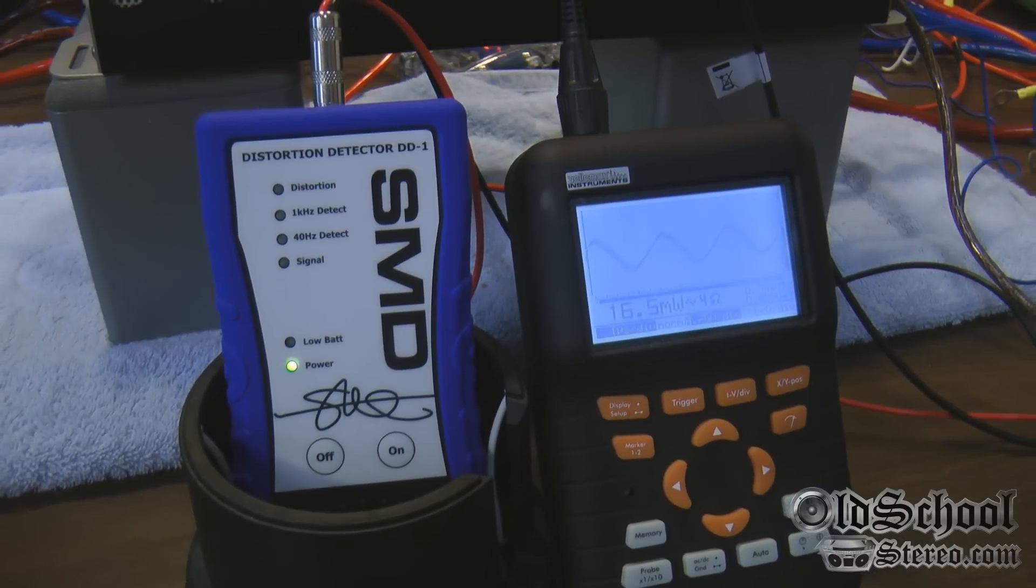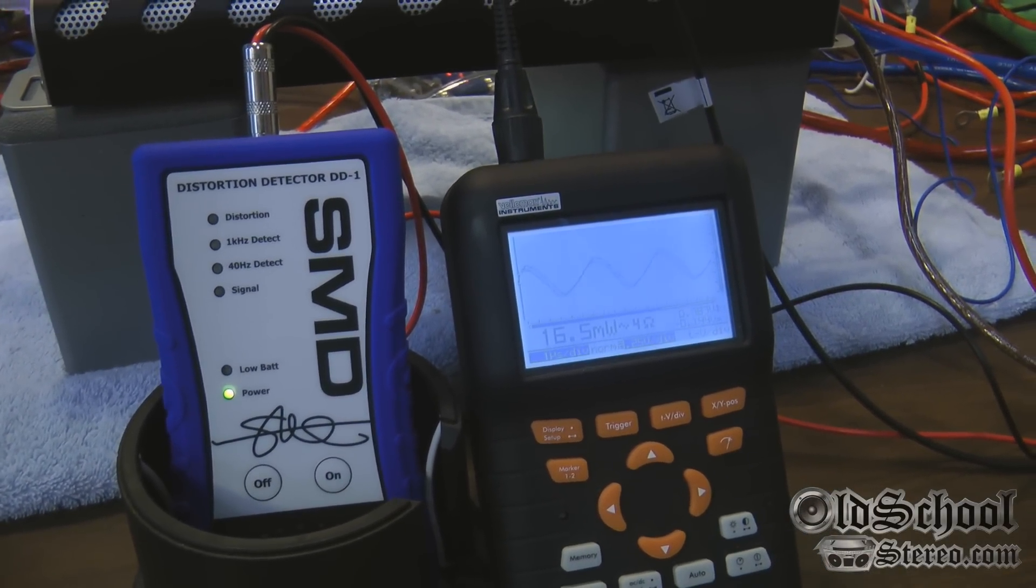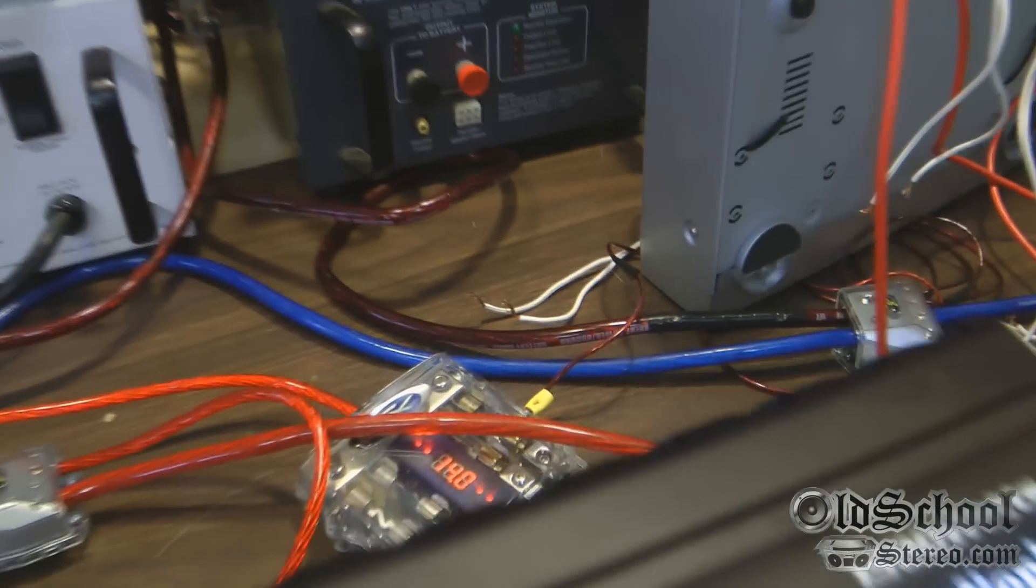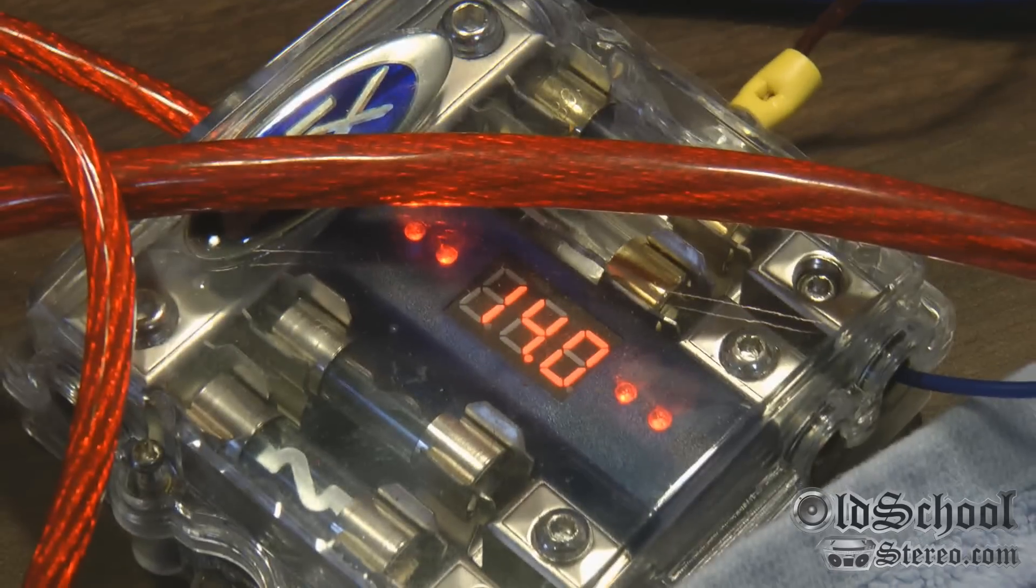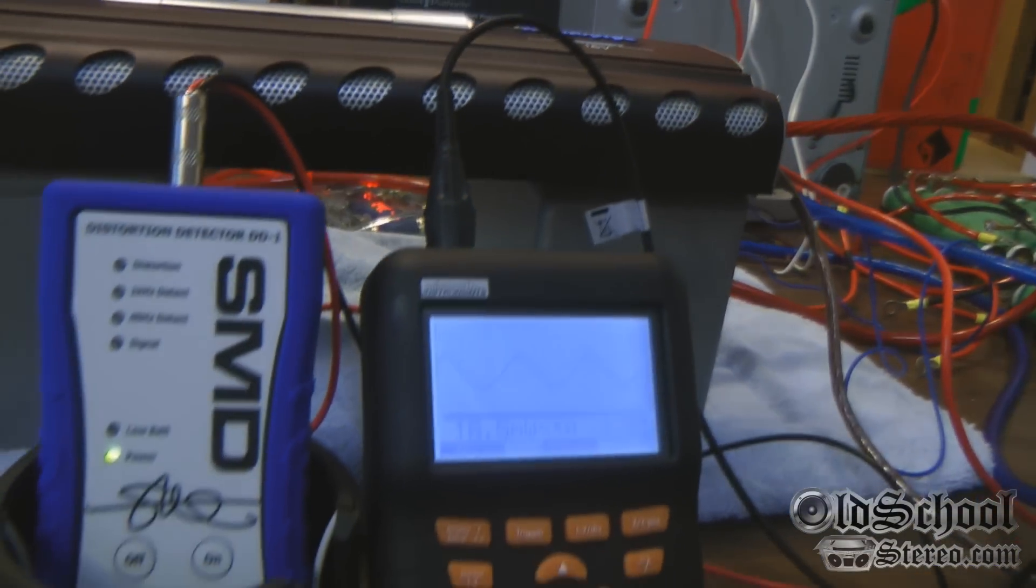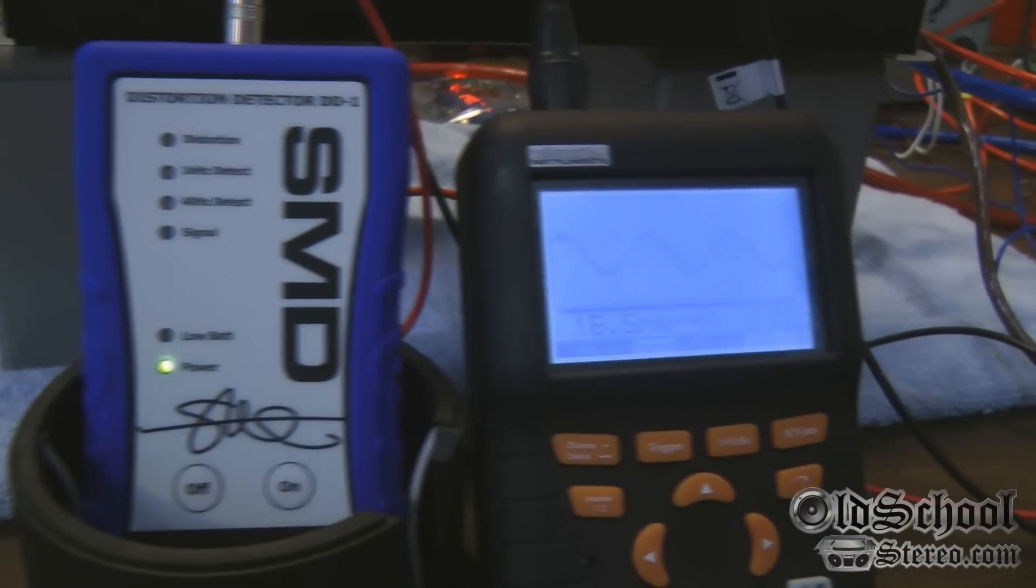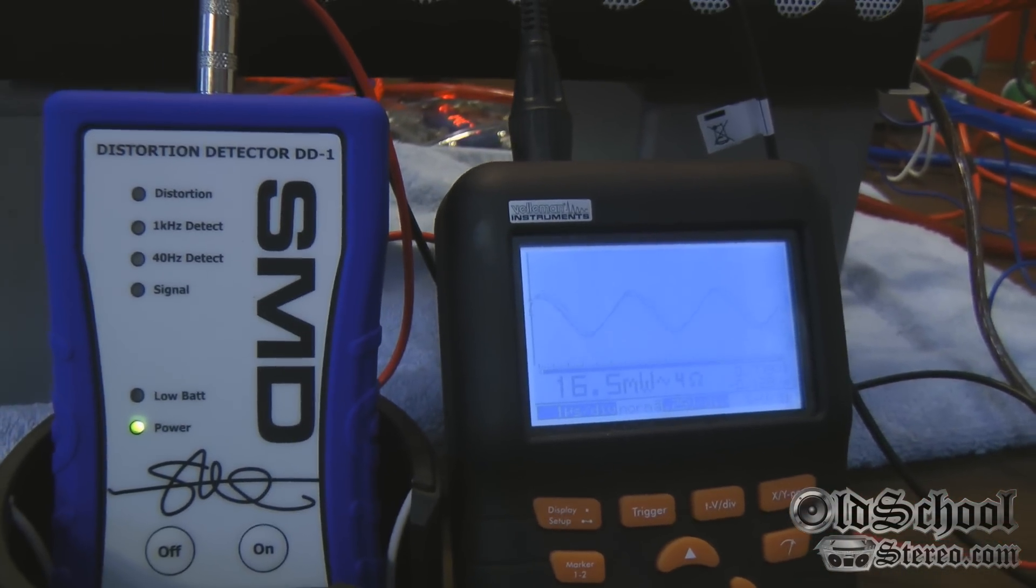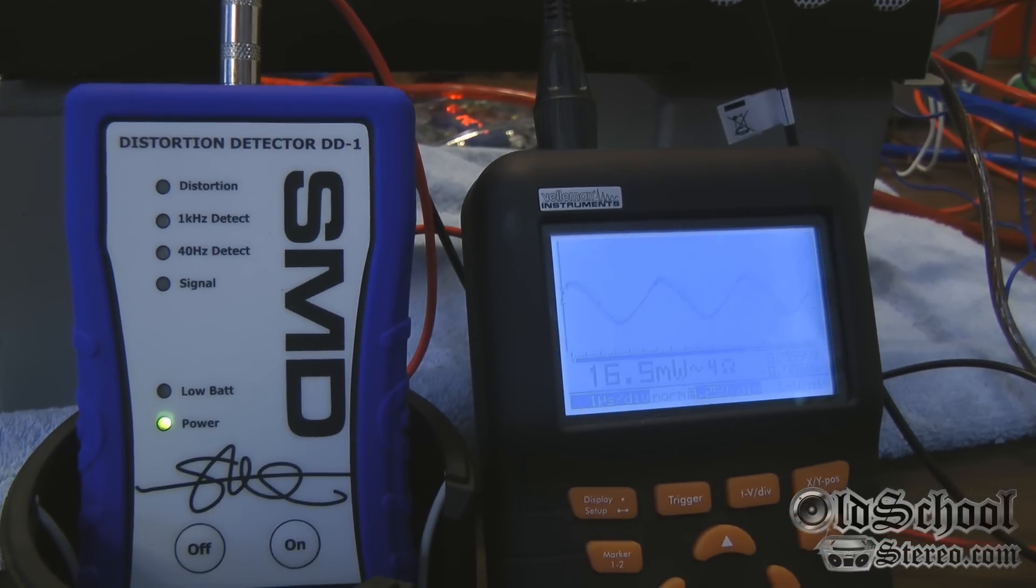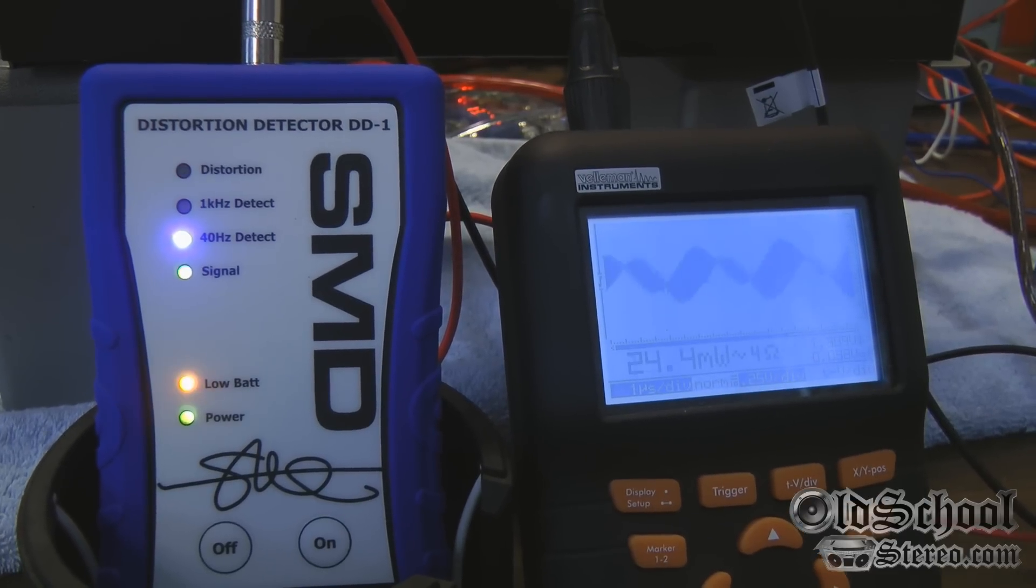Okay, we have the Audiopipe 15001D hooked up to a 4 ohm resistive load and we have 14 volts going into the amplifier. We're going to see if it meets the rating of 600 watts at less than 1% distortion. I'm going to handhold this camera to show you the amperage that's pulled as well. There you see the 40 Hertz test tone.